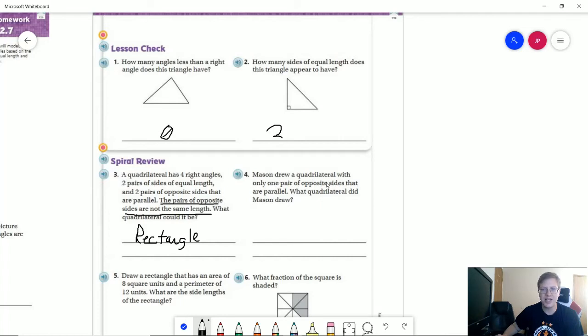Number four, Mason drew a quadrilateral with only one pair of opposite sides that are parallel. That means we would have a trapezoid. I'm just going to abbreviate that like so.